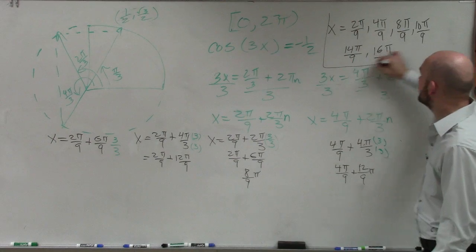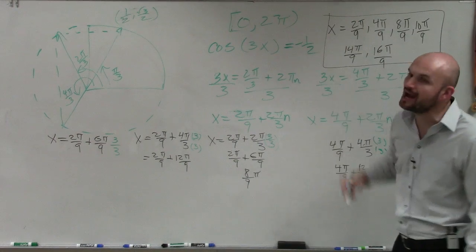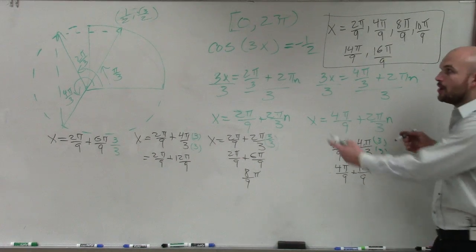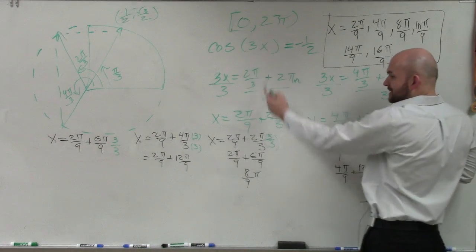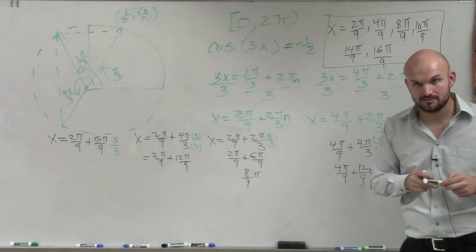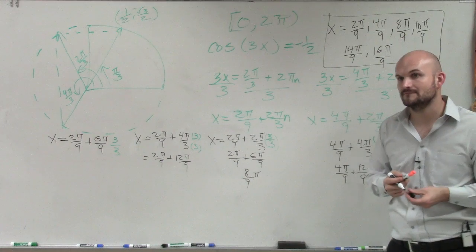So if I said find all the solutions between 0 and 2π, it's not as simple as just saying, oh, it's 2π over 9 and 4π over 9. Because now, since I had to divide by my 3, I'm changing now all of those possible solutions.